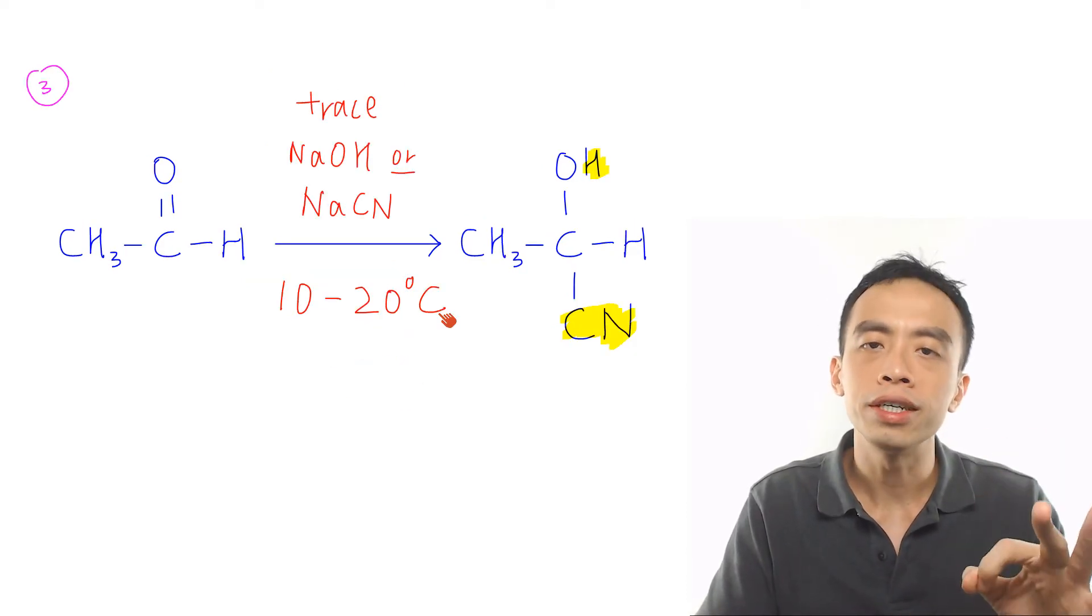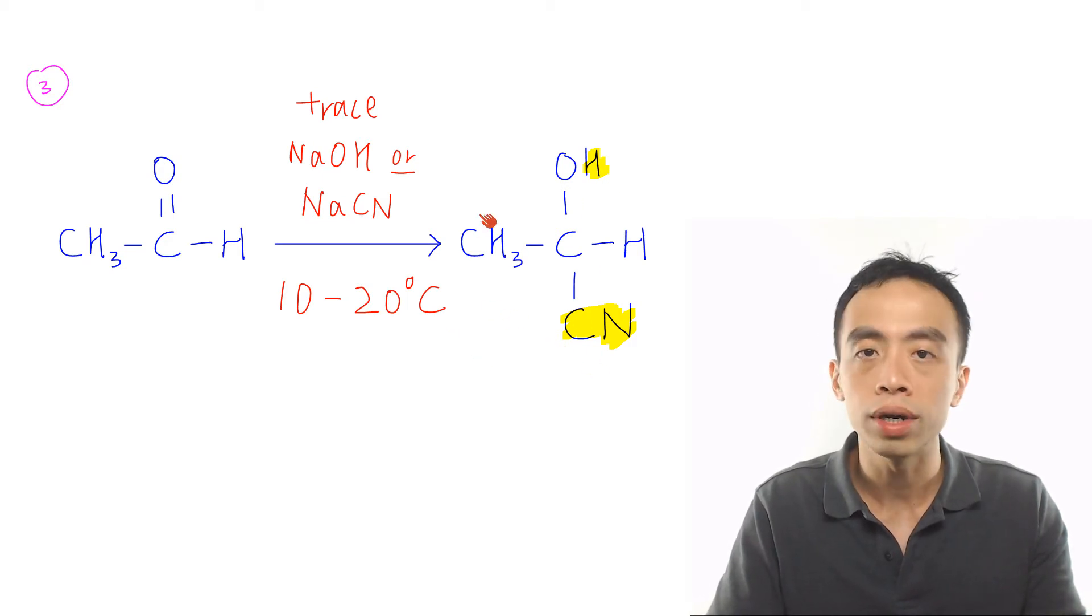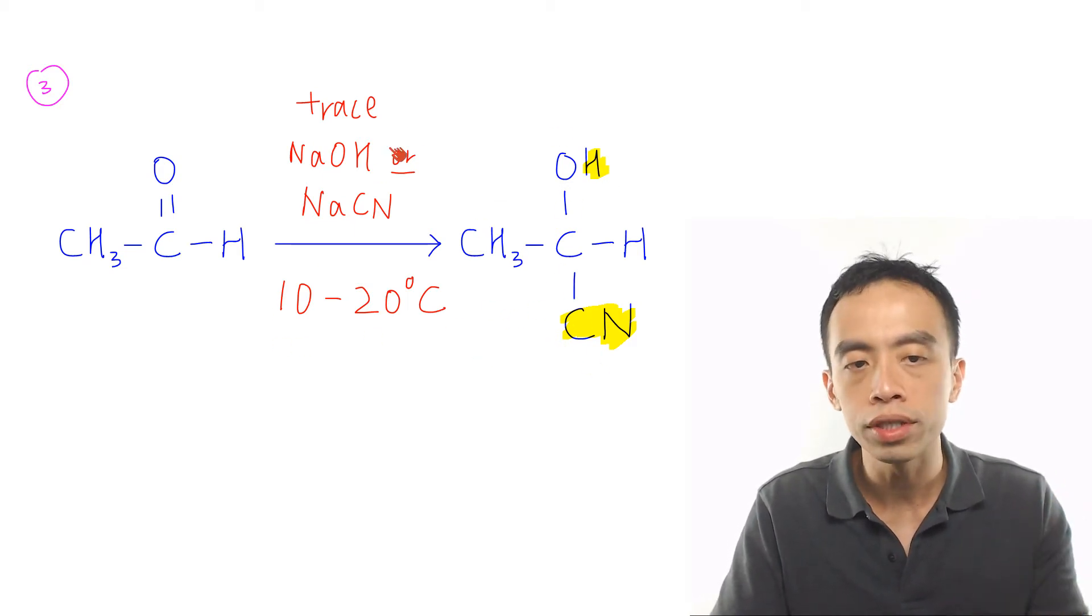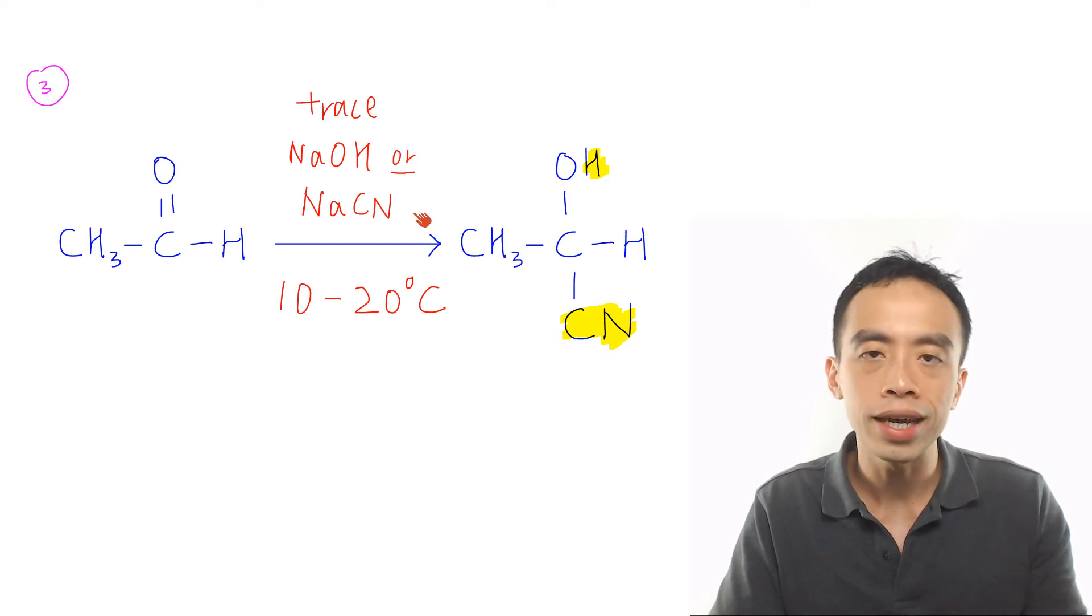Must-know reaction number 3 for my aldehyde would be the nucleophilic addition reaction to form our cyanohydrin. Now this is done using trace NaOH or trace NaCN at 10 to 20 degrees Celsius.